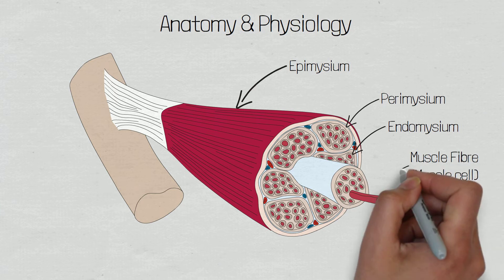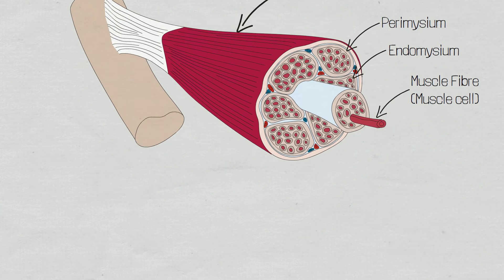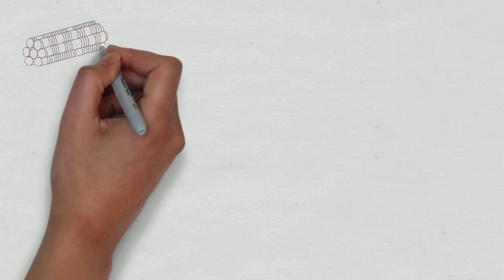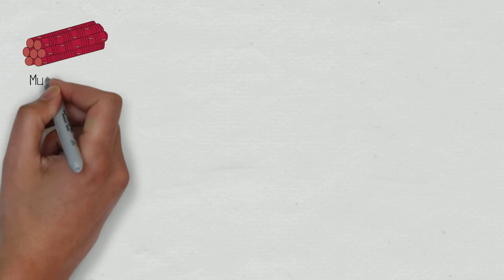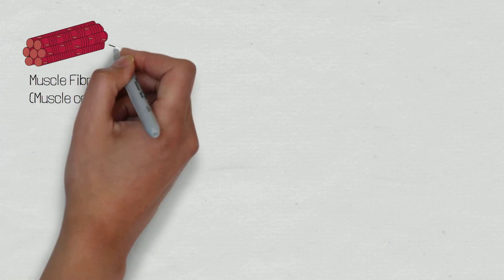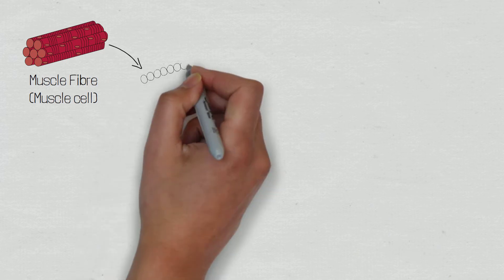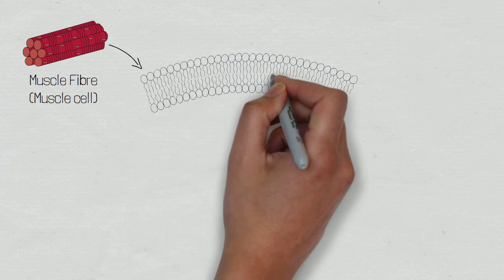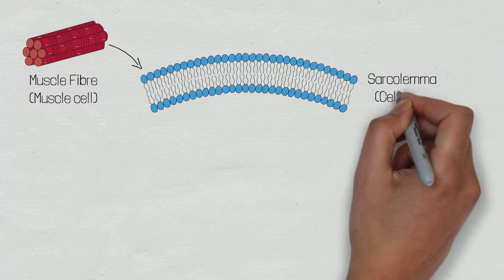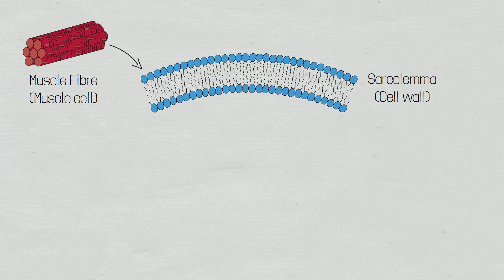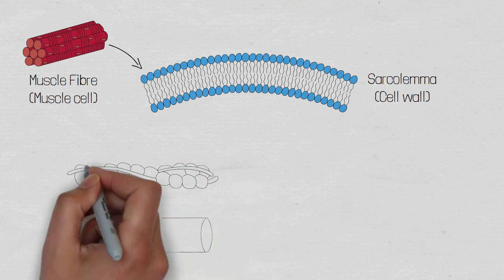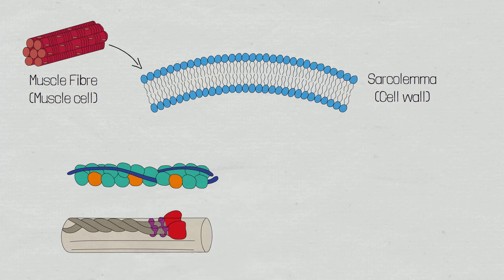The endomysium also contains capillaries, nerves, and lymphatics. It overlies the muscle fibre's cell membrane, which is called the sarcolemma. The sarcolemma — sarc meaning 'flesh' and lemma meaning 'sheath' — encases each muscle fibre. Each muscle fibre is a single muscle cell which is cylindrical in shape. The muscle cell contains myofibrils within the sarcolemma, and myofibrils are the contractile fibres of the cell.